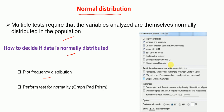Before performing statistical testing, we first want to determine if our data is normally distributed or not. To determine this, we can plot the frequency distribution, or perform a test for normality using GraphPad Prism. I'm now going to show you an example of how to perform the test of normality using GraphPad Prism.